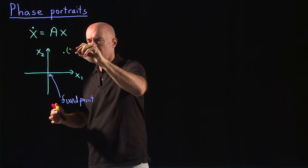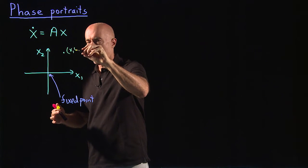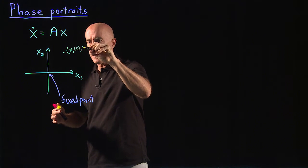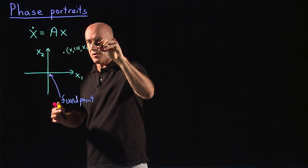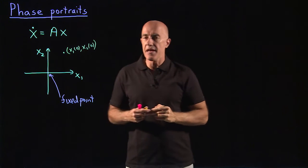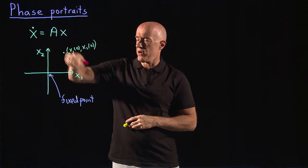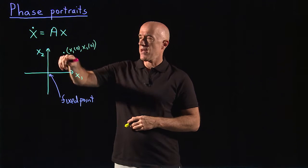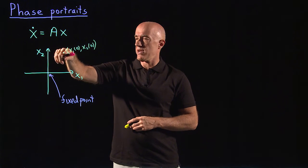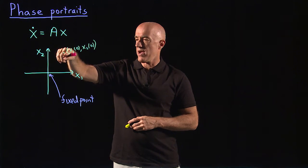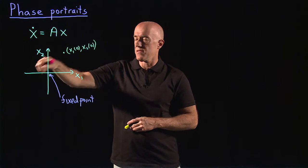So this would be the value x1 at t equals zero and x2 at t equals zero. And then follow what the trajectory of this initial point will be. So that means we solve the differential equation and we follow where this point moves in the phase space.